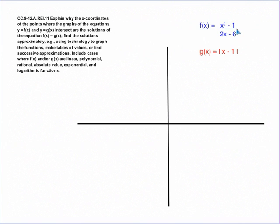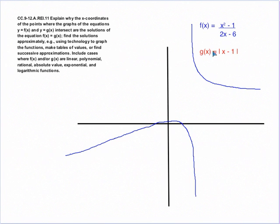Let's continue on. The standard asks for other types of functions, so let's try a rational function and an absolute value function together. If we graph the rational function, it would look something like this, and here we would have a vertical asymptote at x = 3, because that would give us a zero in the denominator. Then if we graph the absolute value function, it would look something like this. It looks like we might have two points of intersection, so we use our technology to help us.